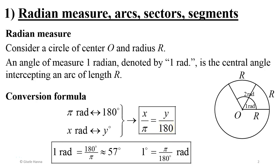In this lesson we're going to introduce the radian measure as a unit of angles, other than degrees, and discuss arcs, sectors, and segments. Looking at this circle, one radian corresponds to an arc of length equal to the radius. It's the distance from one point to the other that equals R. Whenever you have an arc of length equal to the radius, the central angle has a measure of one radian.